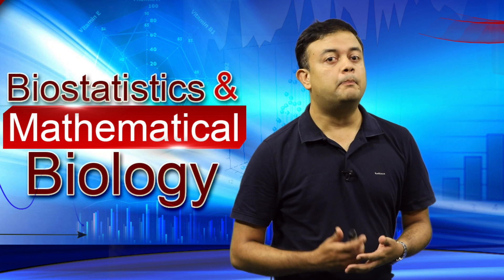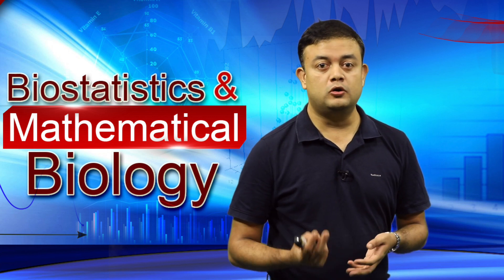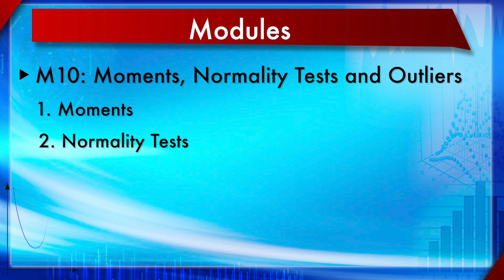We will start with module number 10. There will be two modules this week. In module number 10 we are going to cover moments, normality tests, and outliers in respective sections. Section number 1 will be about moments, section 2 will be about normality tests, while section 3 will be about outliers.